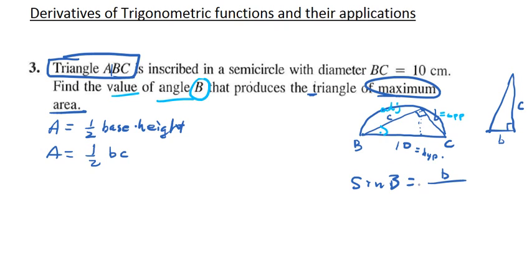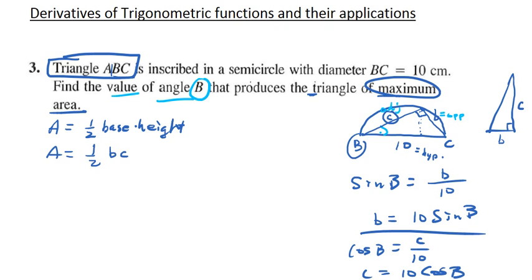Likewise, we can write C in terms of big B as well. That's the adjacent and we can use 10 as the hypotenuse, so cosine of big B is adjacent over hypotenuse, and so C is actually 10 times cosine B. That's really helpful to have B in terms of sine of big B and C in terms of cosine of big B.